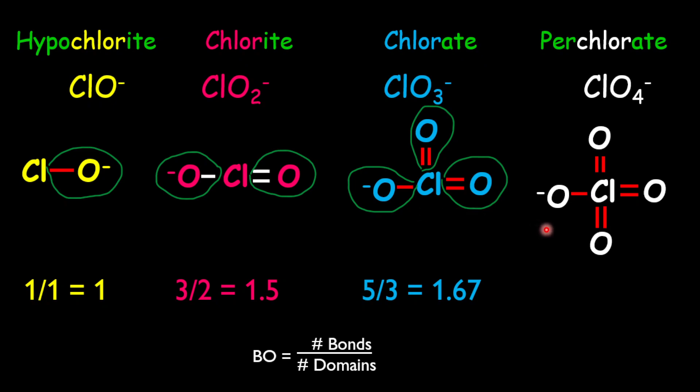In the perchlorate ion, we have a total of 7 bonds, 3 double bonds and a single bond. And we have 1, 2, 3, and 4 domains. Therefore, the bond order will be given as 7 divided by 4, which equals 1.75.